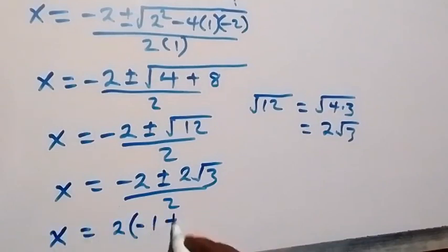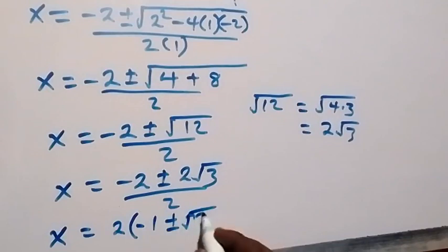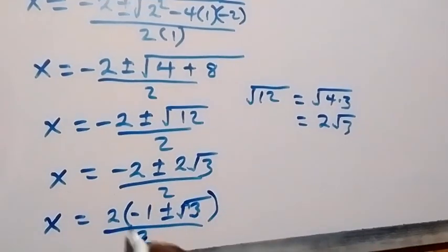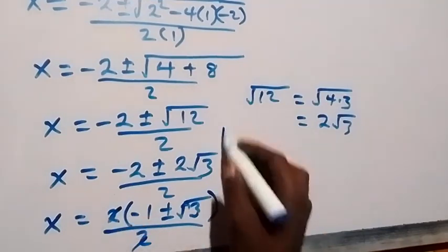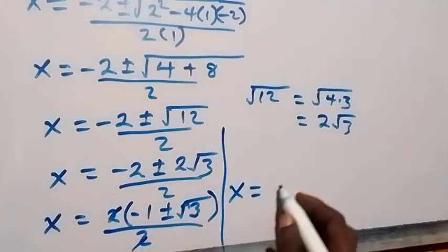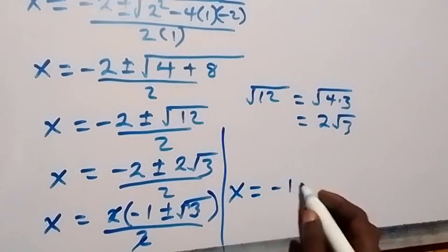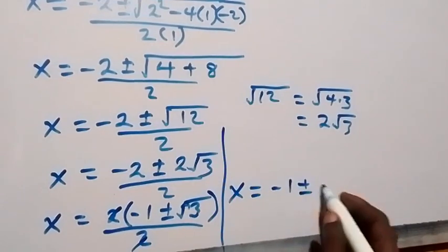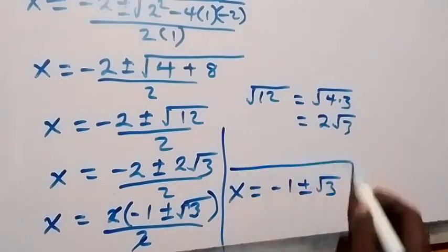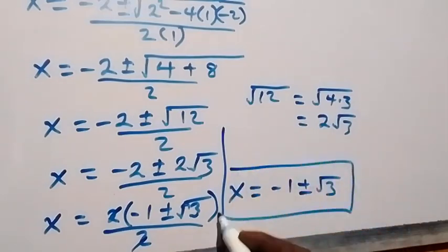Root 12 simplifies to 2 root 3. So we have minus 2 plus or minus 2 root 3, over 2. The 2 cancels, giving x equals minus 1 plus or minus root 3. So we have two values of x from this equation.